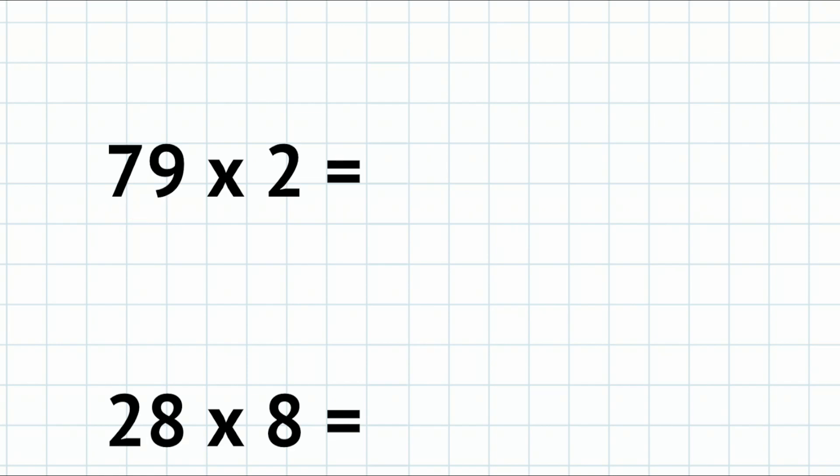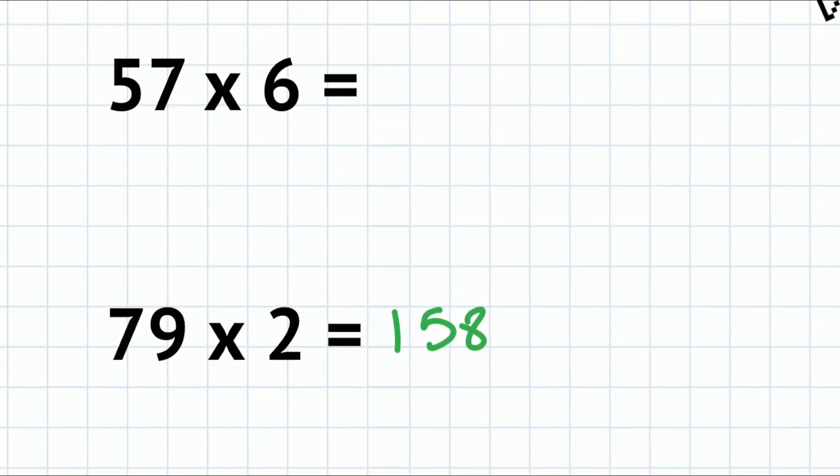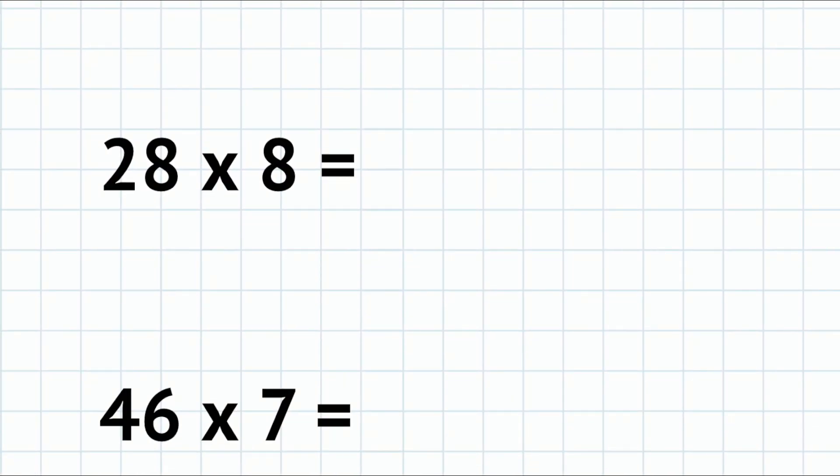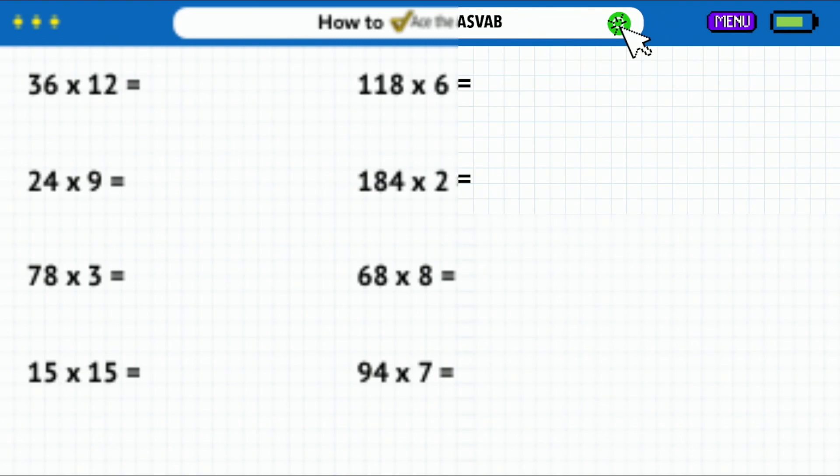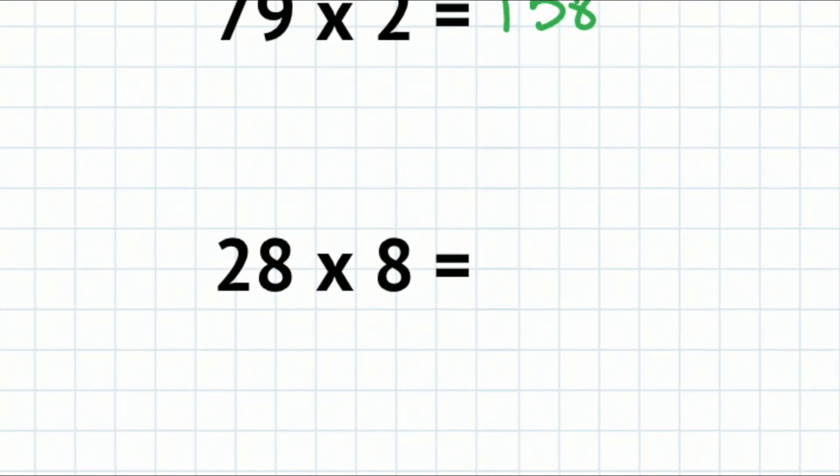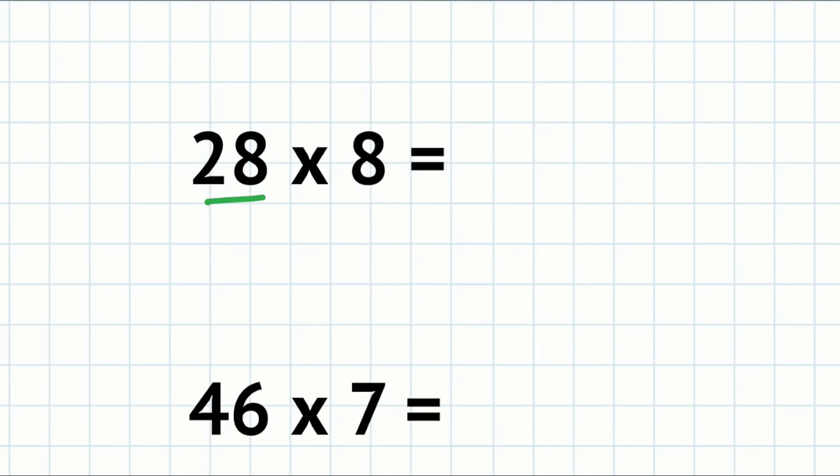Watch this: 79 times 2—70 times 2 is 140, 9 times 2 is 18, 140 plus 18 is 158. Done. 57 times 6—50 times 6 is 300, 7 times 6 is 42, so 342. Done. That's really it. You're splitting one of the numbers up into two easier numbers. Here, 28 times 8—I'd split 28 into 20 and 8. 8 times 20 is 160, 8 times 8 is 64, 160 plus 64 is 224.